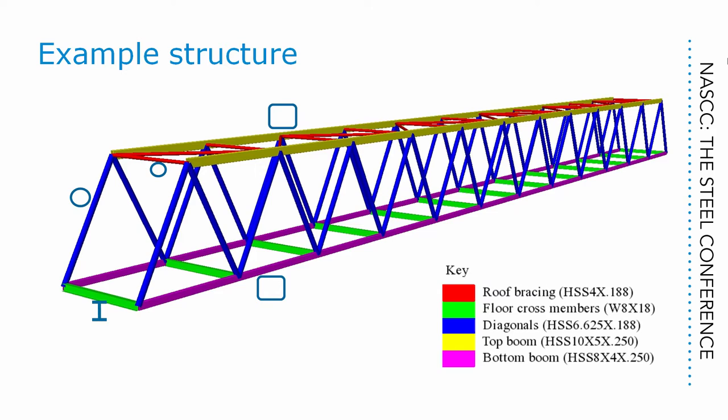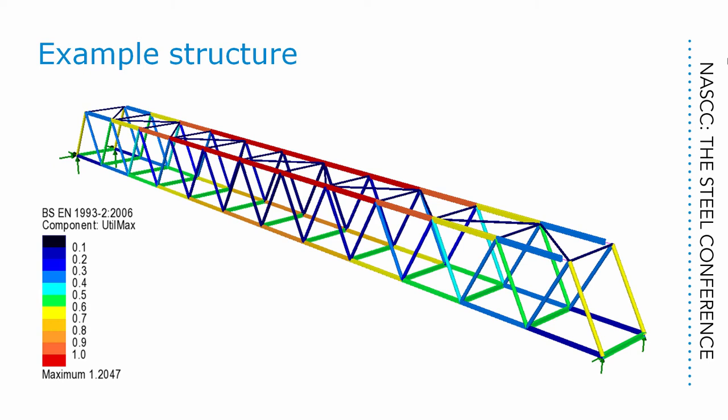We used a footbridge as a comparison so it was simple to compare the resistances rather than also comparing the different traffic loading from the different codes — that would be a paper for another day. Instead, we simply applied a UDL of 1.8 kip per foot to each floor beam. We omitted all load factors again to avoid comparing those, and stuck with the member resistances. LUSAS checks every member — in fact, every tenth point along a member.